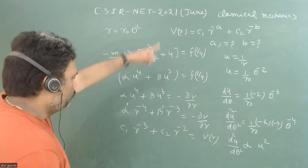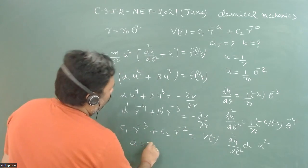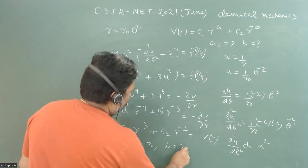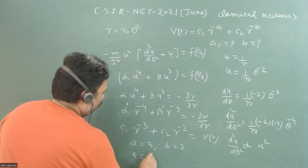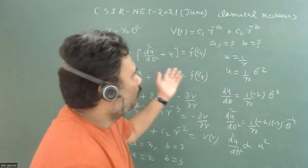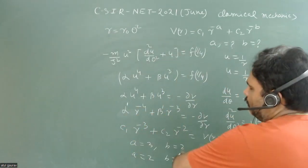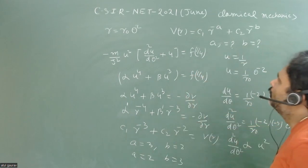And when we are going to compare this particular thing, then we have a is equal to 3 or b is equal to 2, or you can write a is equal to 2, b is equal to 3, because it is not given which one is bigger or which one is smaller. But these two things can be easily a suitable value of this particular problem.